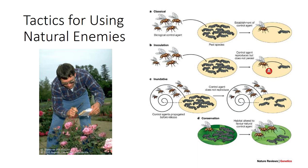Three basic strategies are used to increase the effectiveness of biological control agents in the field: importation or classical, conservation and enhancement, and augmentation including inoculation and inundative. Each of these techniques can be used either alone or in combination in a biological control program.